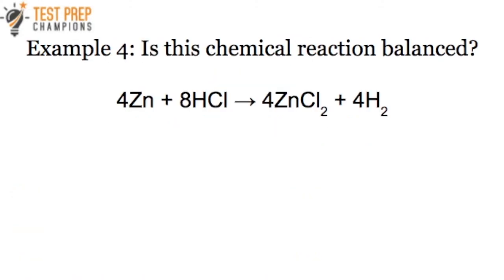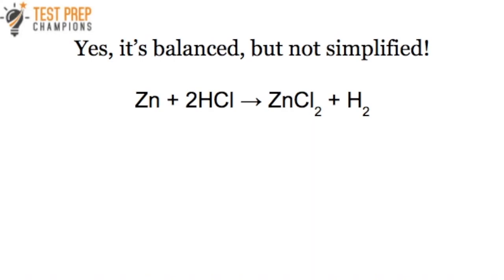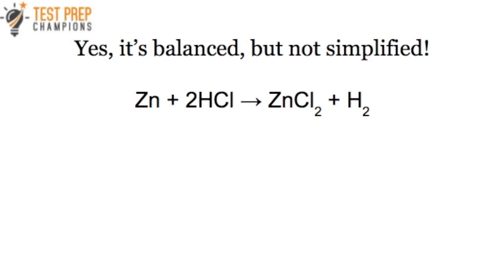The next question: is this reaction balanced? 4Zn + 8HCl → 4ZnCl2 + 4H2. On the left: 4 Zn, 8 H's, 8 Cl's. On the right: everything the same. It is balanced, but it's not simplified. To simplify, divide everything by four — that brings us down to Zn + 2HCl → ZnCl2 + H2. If you ever balance a reaction and your answer doesn't match the multiple choice option, note that the answer could be right but might need to be simplified.